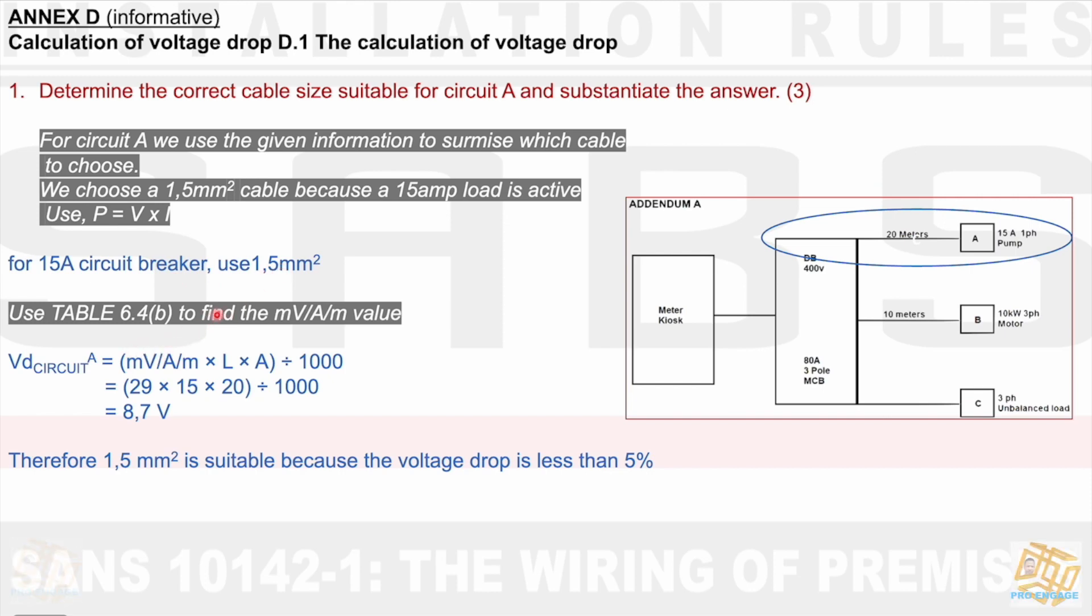We then say we go to that table and we find that value for MVAM. And that would be 29 for 1.5 mm², checking on your tables, times a distance of, sorry, this is amps, and a distance of 20 meters. I'll swap those two. And then divide that by 1000, I get 8.7 volts. Therefore, 1.5 mm² cable is suitable because the voltage drop is less than 5%.